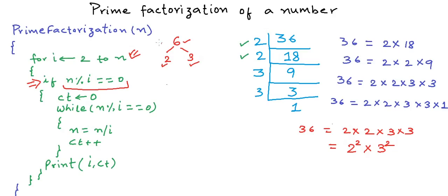But before i would reach 6, we would already have divided n by i=2 and i=3 as many times as possible. So we definitely cannot divide n by 2 or 3 anymore — this is a contradiction. Therefore, only prime numbers will be able to divide n in our approach. Take some time and think through it; it should be easy to get.